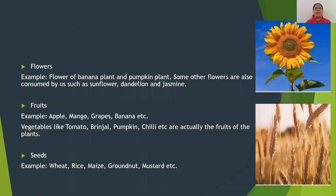Moving further, we also consume some flowers of plants. Some plant flowers can be consumed as food. Examples include the banana plant and pumpkin plant flowers. Some other flowers that can be consumed are sunflower, dandelion, and jasmine.